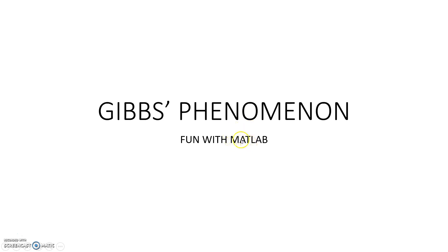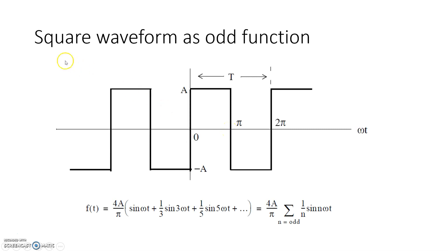I will show you by MATLAB what Gibbs phenomenon is and where it actually occurs. Consider a square wave function — it is an odd function because the condition f(-x) = -f(x) is satisfied. On the x-axis, omega*t is plotted, and on the y-axis the amplitude of the square wave is plotted, oscillating from -a to +a.